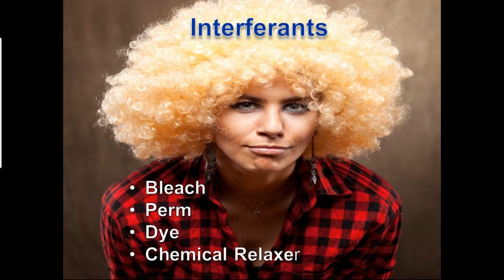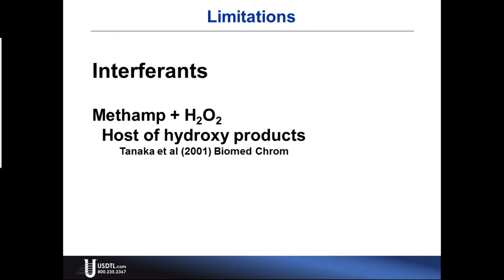A good example was described back in 2001 by Tanaka. He described that methane plus hydrogen peroxide resulted in a host of hydroxy products. We are not looking for these hydroxy products, and neither do our immunoassays look for these hydroxy products, so the likelihood of achieving a negative screening or confirmation is increased. We're familiar with hydrogen peroxide as far as bleaching goes, but what most people don't consider is that many hair dye preparations will contain varying amounts of hydrogen peroxide. So we have to consider all cosmetic treatments.